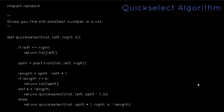Hey guys, it's Quinston, and today we are going to learn about the quick select algorithm. The quick select algorithm basically gives you the nth smallest number in a list. Suppose you have a list of elements and you want to find the third smallest element or the second smallest element.